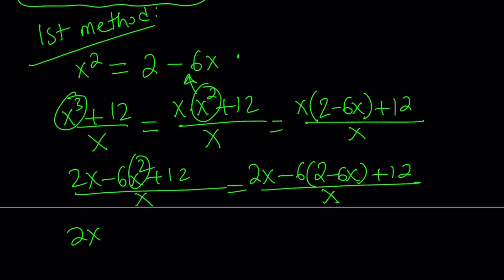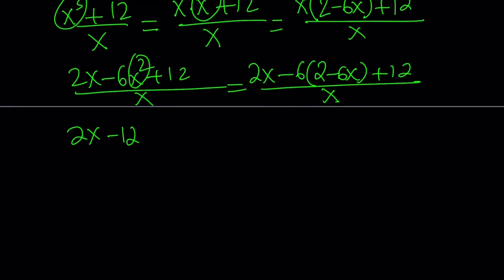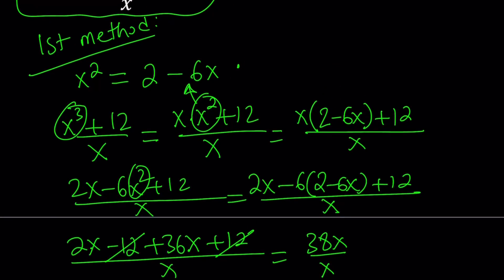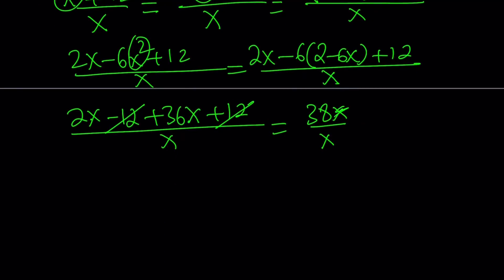2x minus 12 plus 36x plus 12 divided by x. Now negative 12 and positive 12 cancel out. We have 2x plus 36x, which is 38x divided by x. Suppose that x does not equal zero, and you can tell x does not equal zero for sure because it doesn't satisfy the equation. We get 38 as our answer. Awesome.